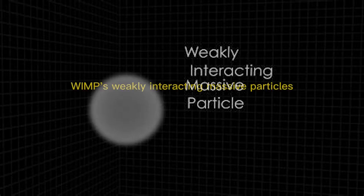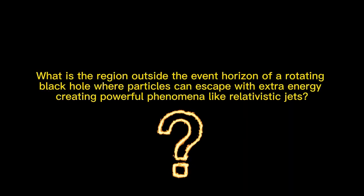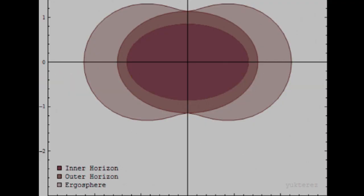Weakly interacting massive particles. What is the region outside the event horizon of a rotating black hole where particles can escape with extra energy, creating powerful phenomena like relativistic jets? Ergosphere.